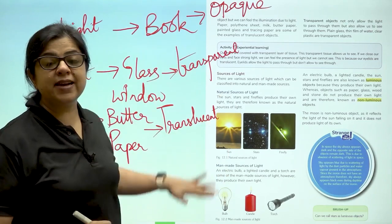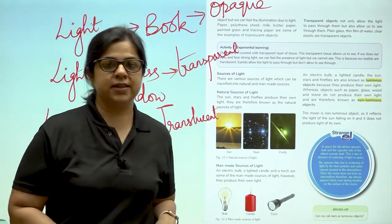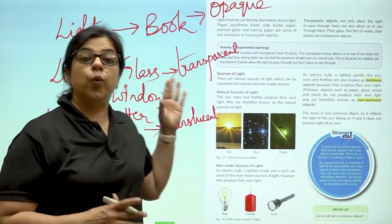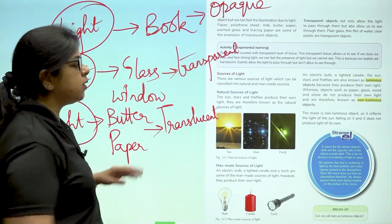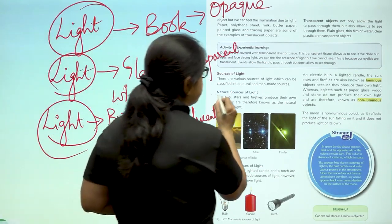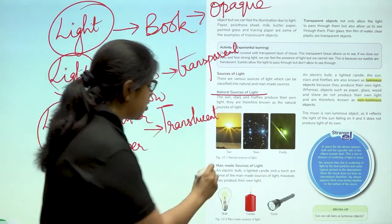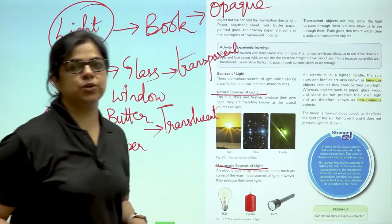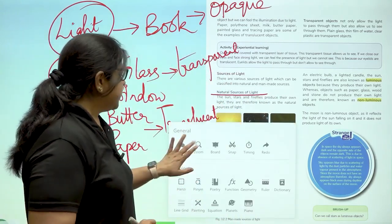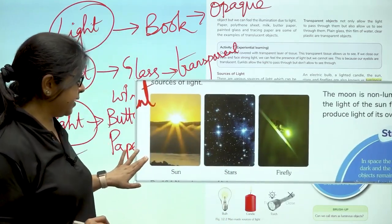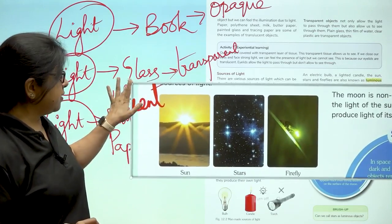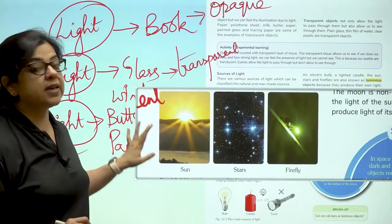So these are the three kinds of objects in our surroundings. And where does this light come from? This light in all the cases can come from either natural sources or man-made sources. What are the examples of natural sources of light? They are fireflies, the stars and the sun.